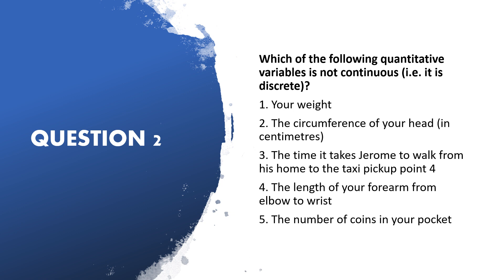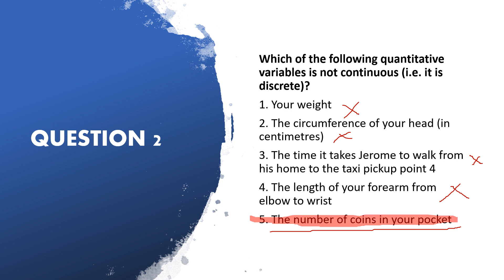You can measure your weight, you can measure the circumference of your head in centimeters, you can measure time, and you can measure the length of your arm — so all four are continuous. The question asks which one is a discrete variable, meaning which arises from counting. The answer is: 'number of coins in your pocket' — you cannot measure the number of coins but you can count them, so this is the correct answer.